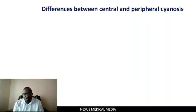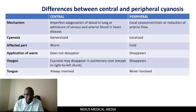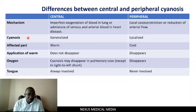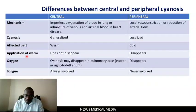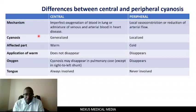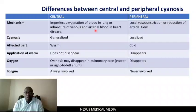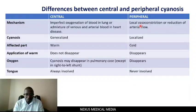To conclude cyanosis, we shall go through the differences between central and peripheral cyanosis. Here you have the mechanism. In central cyanosis, the mechanism is imperfect oxygenation of blood in the lung, or admixture of venous and arterial blood in the heart. In peripheral cyanosis, this is local vasoconstriction or reduction in arterial blood flow.